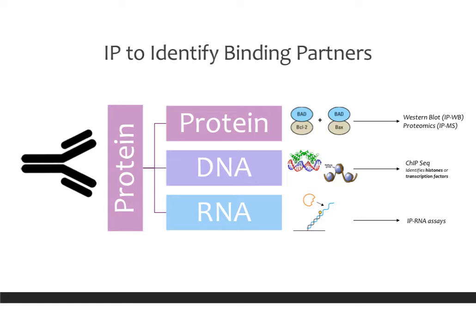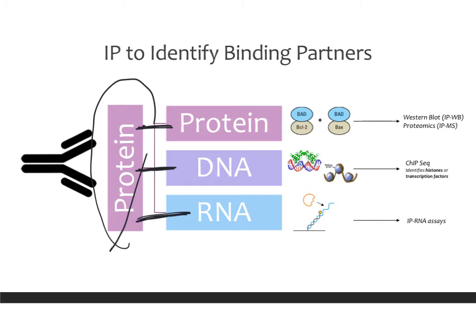When you put an antibody against a specific protein, you pull down whatever that protein has bound to. That could be another protein, allowing you to identify protein-protein interactions. It could be a DNA sample, allowing you to identify how a protein is acting on DNA. Or it could be an RNA sample, showing you how the protein acts on RNA. We can use these antibodies as a powerful tool to identify all of these different interactions that otherwise we couldn't pull out from everything going on in the cell.